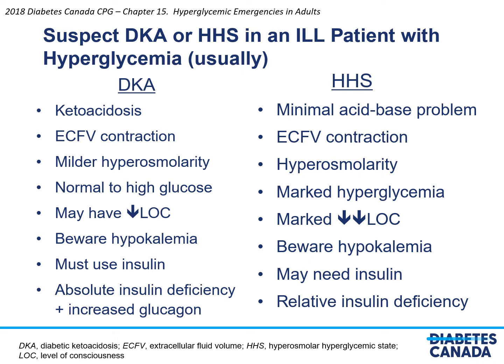In terms of HHS, there's a minimal acid-base problem. The major problems are ECF volume contraction with hyperosmolarity and marked hyperglycemia. The patient usually has marked decreased level of consciousness. Again, beware of hypokalemia, particularly if you're using insulin to treat this condition. They may need insulin, as there is a relative insulin deficiency.